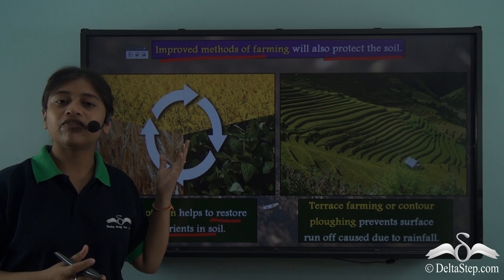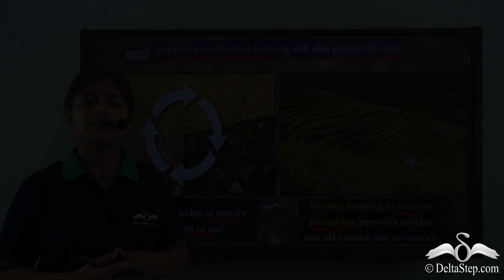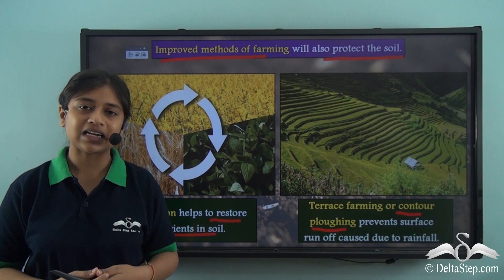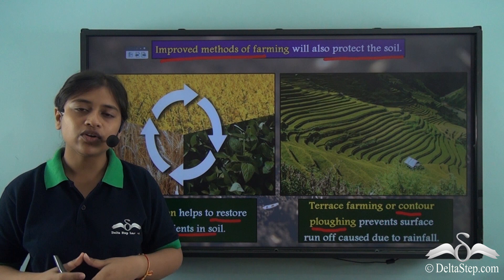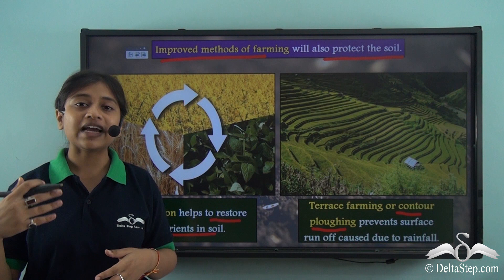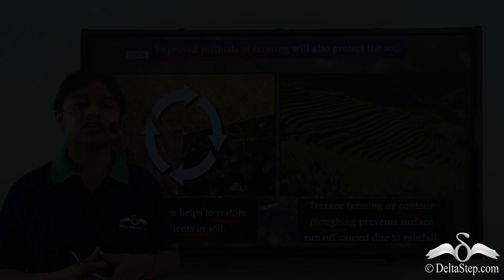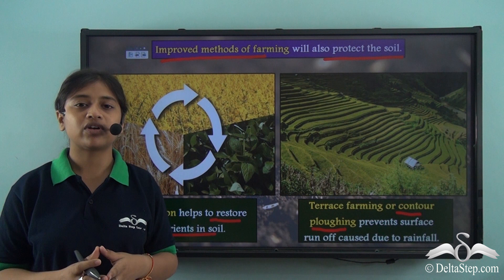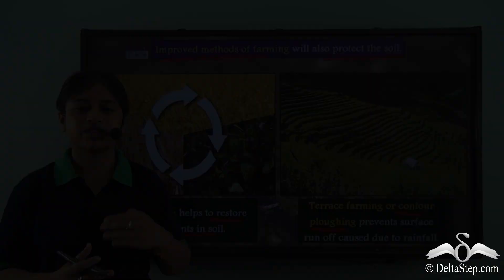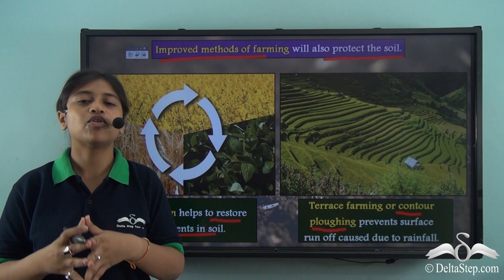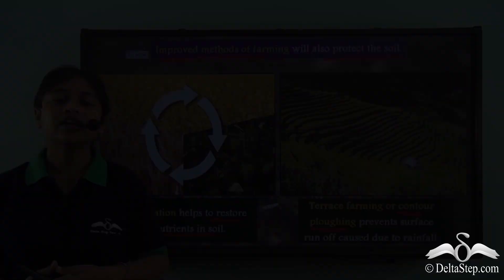The next improved farming method is terrace farming, also known as contour ploughing. Terrace farming is usually practiced in elevated areas like hills or plateau regions, which have a slopey surface where the rate of erosion is much higher compared to plains. To prevent excess erosion and degradation of crop productivity, we can switch to terrace farming where steps are made and crops are grown on those contours or steps. In this method, erosion of soil is much reduced and surface runoff is also cut down to a huge extent.